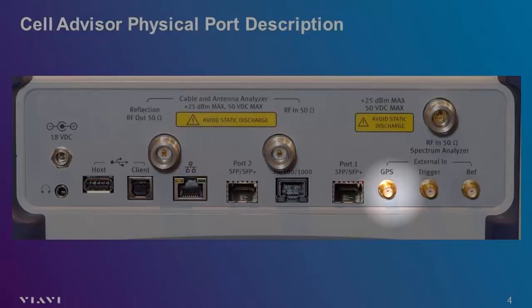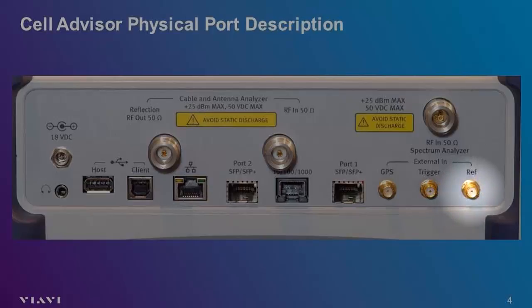Located to the right of the GPS port is the trigger port. The trigger port connects external signals that are used to start or trigger internal measurements. The reference port is used to obtain external timing signals. External references are sometimes used when GPS signals are unavailable or when a measurement requires extreme accuracy. In most circumstances, the trigger port and the reference port are not required.